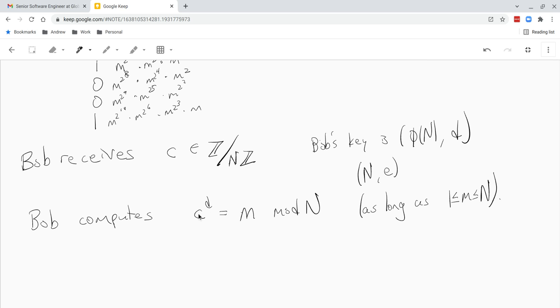So anyways, what we want to prove is just that the thing that Bob computes is really m.